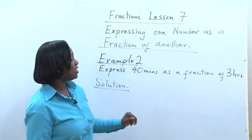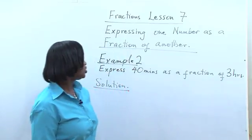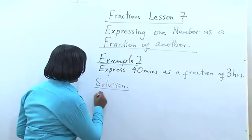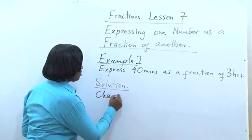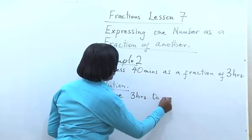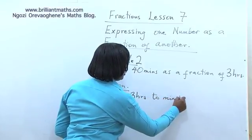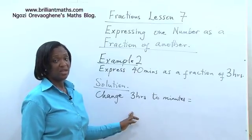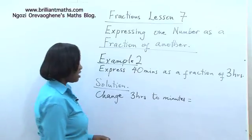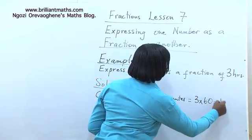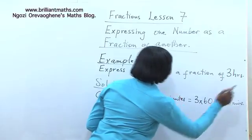40 is in minutes and 3 is in hours. So we need to change both of them to minutes. So change 3 hours to minutes, that is equal to 3 times 60 because 60 minutes make an hour. And 3 times 60 is equal to 180 minutes.